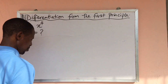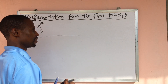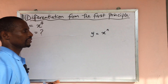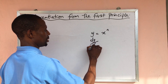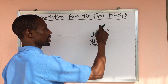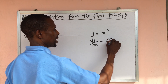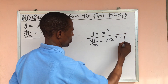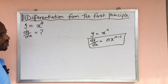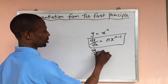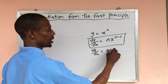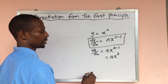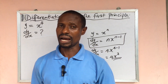In our previous class on differentiation, we were told that if you have a function of this kind — y equal to x to the power of n — from the formula, your dy/dx is equal to n times x raised to n minus 1. If we apply this formula to this function, then our dy/dx will automatically be 4x to the power of 3.